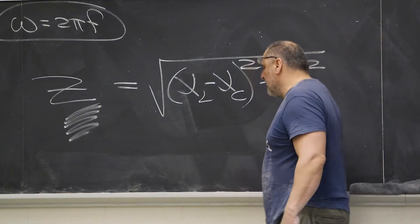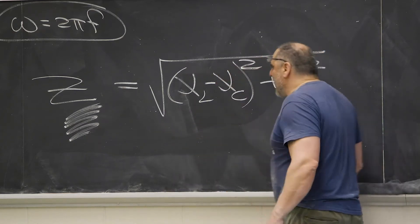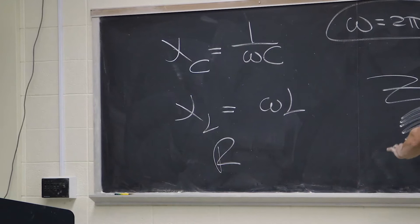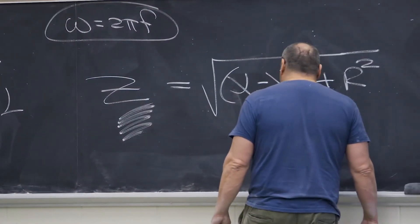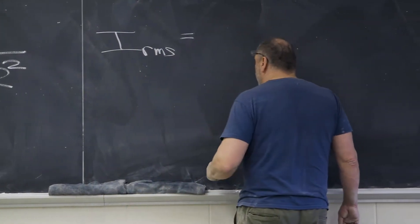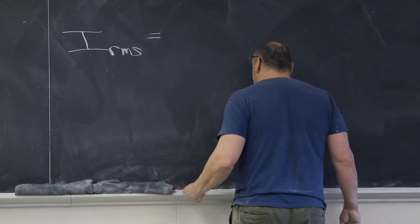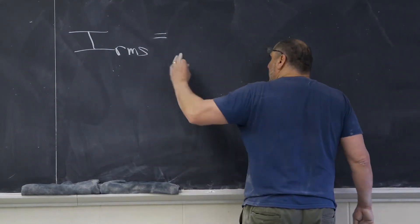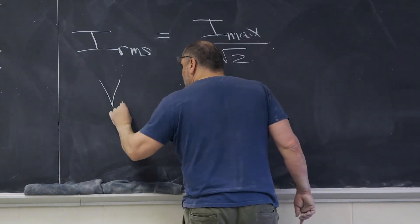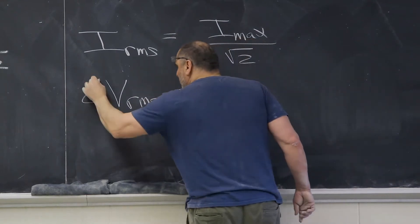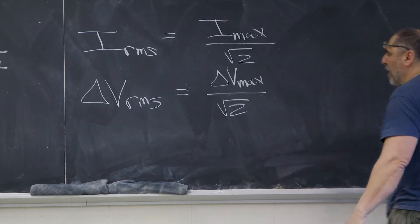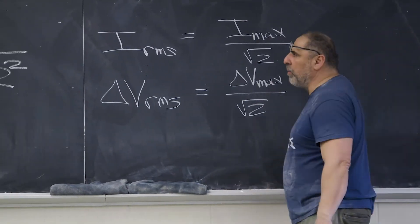The units of XC, the units of XL, and the units of R are all the same — they are ohms. The IRMS is the root mean square: the average of all the squares, then square rooted. That gives you the IRMS, and that's I-max divided by the square root of 2. Similarly, the VRMS — or ERMS, delta V RMS — is delta V-max over the square root of 2. The book goes into this quite a bit.